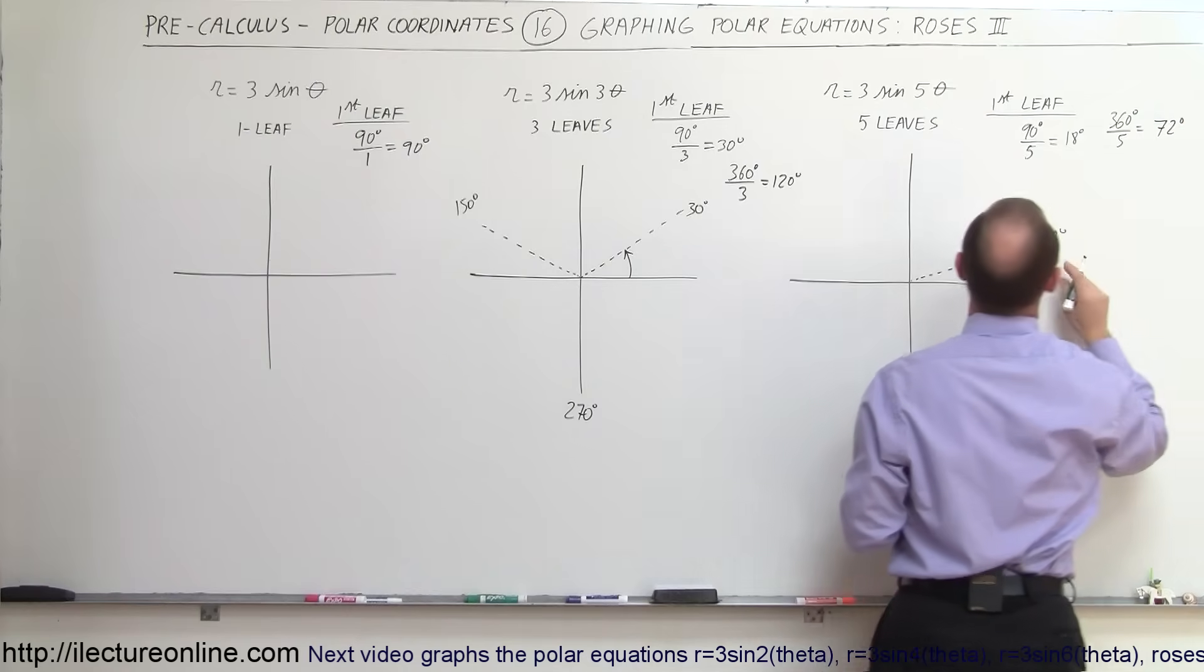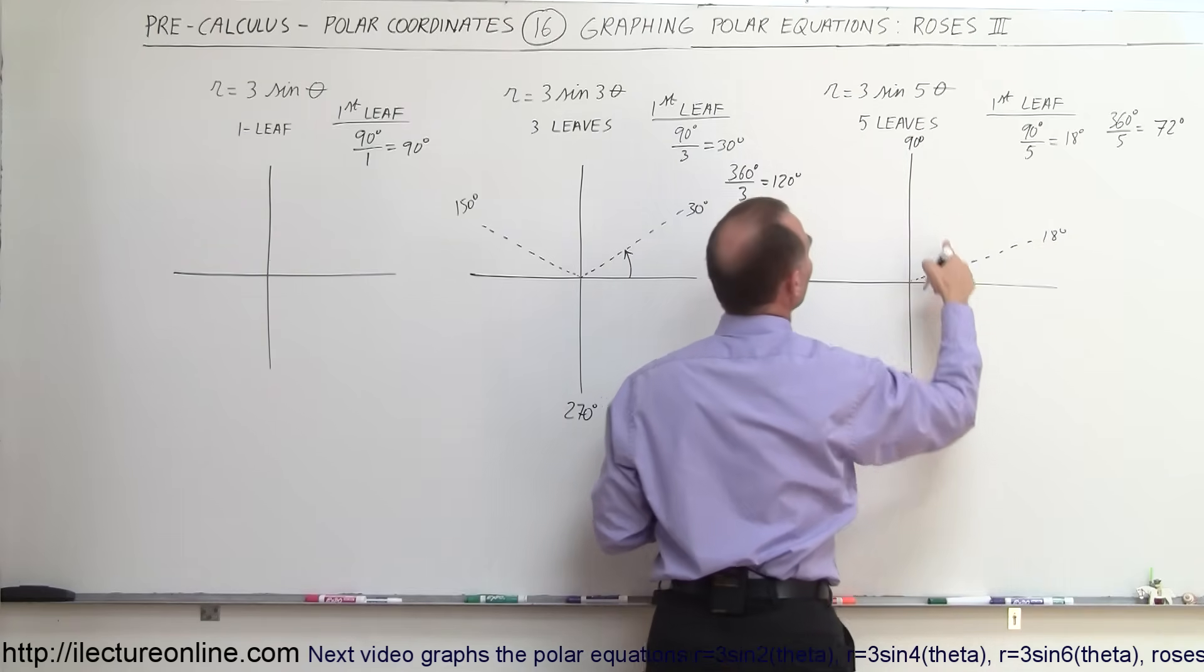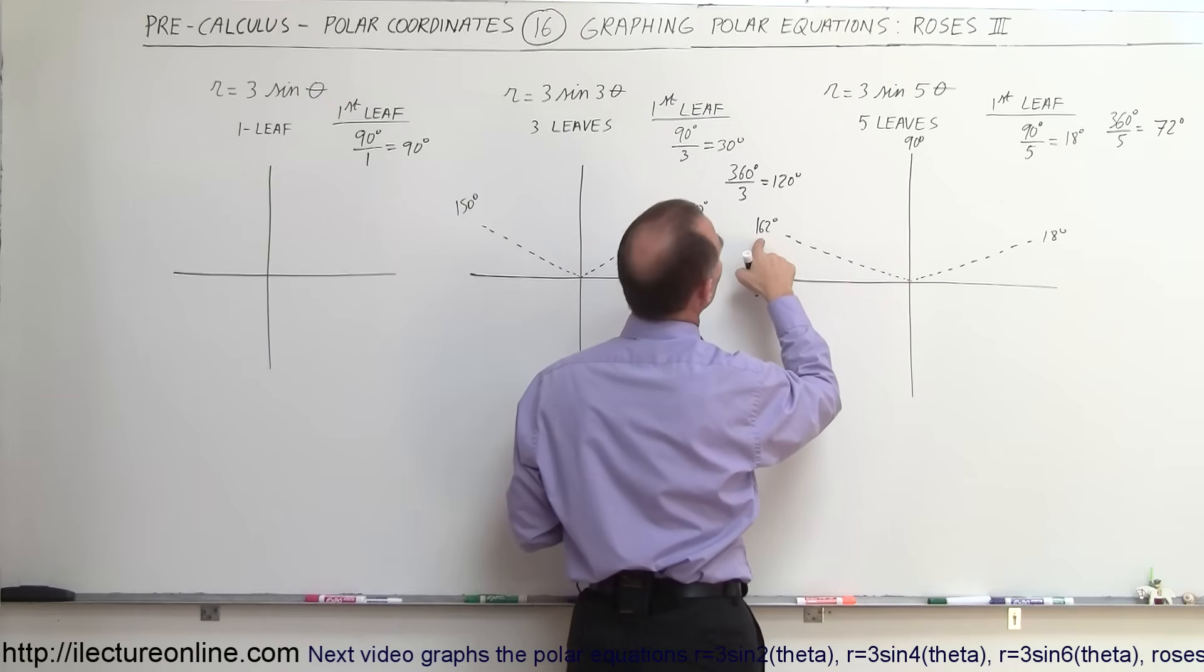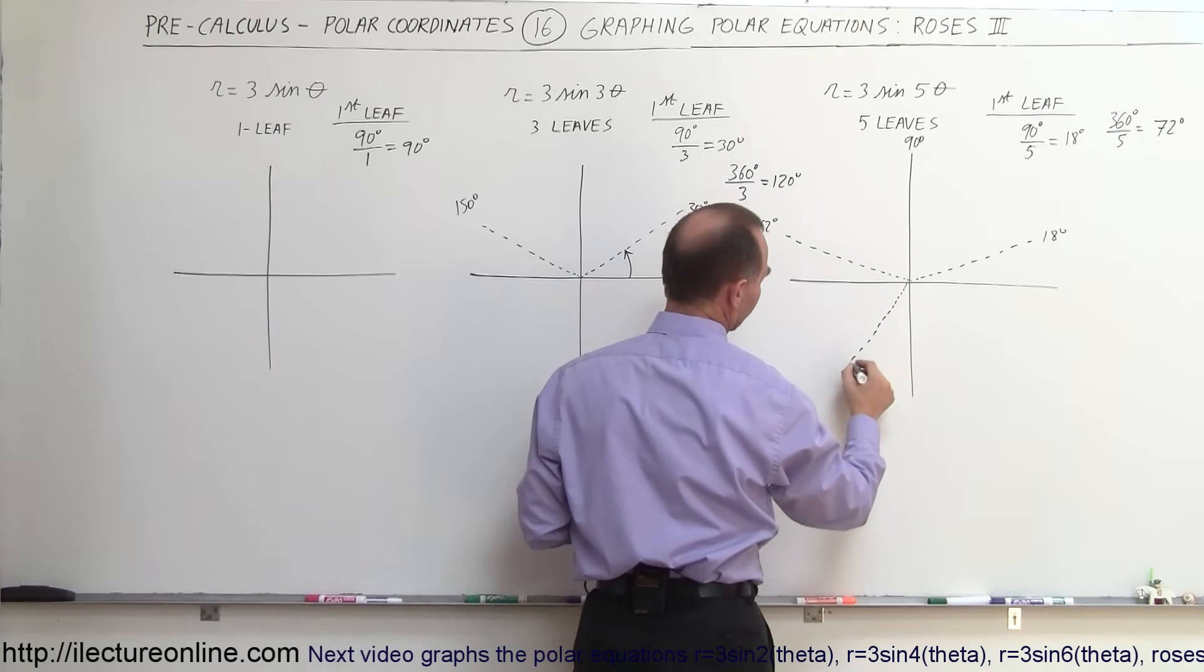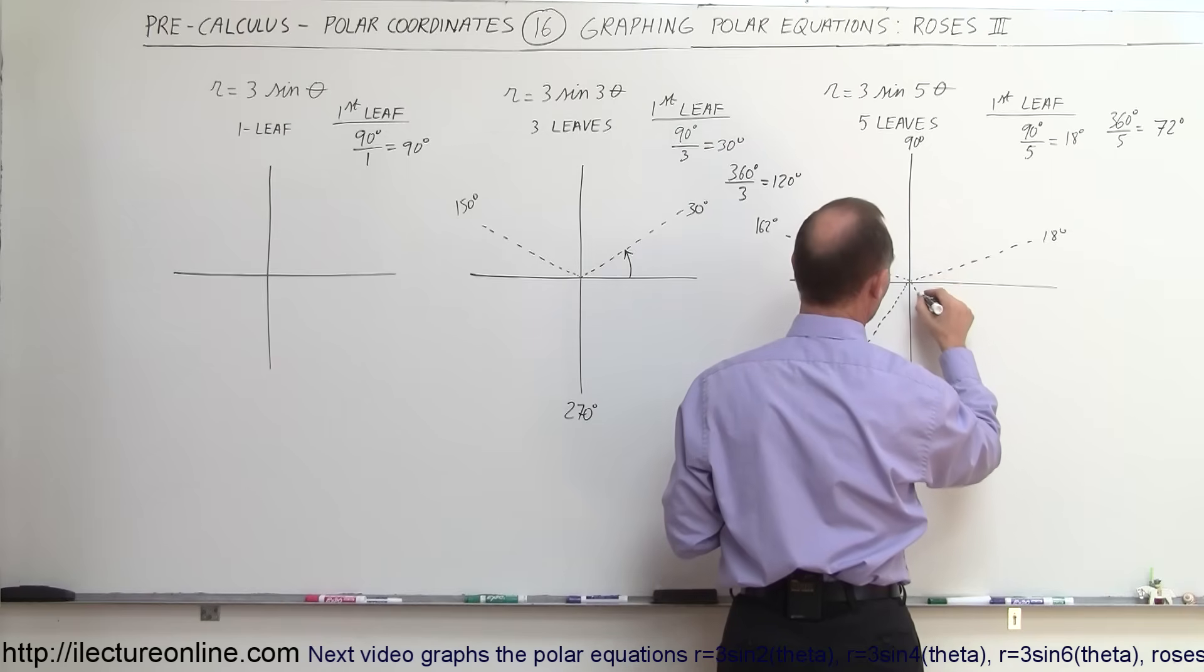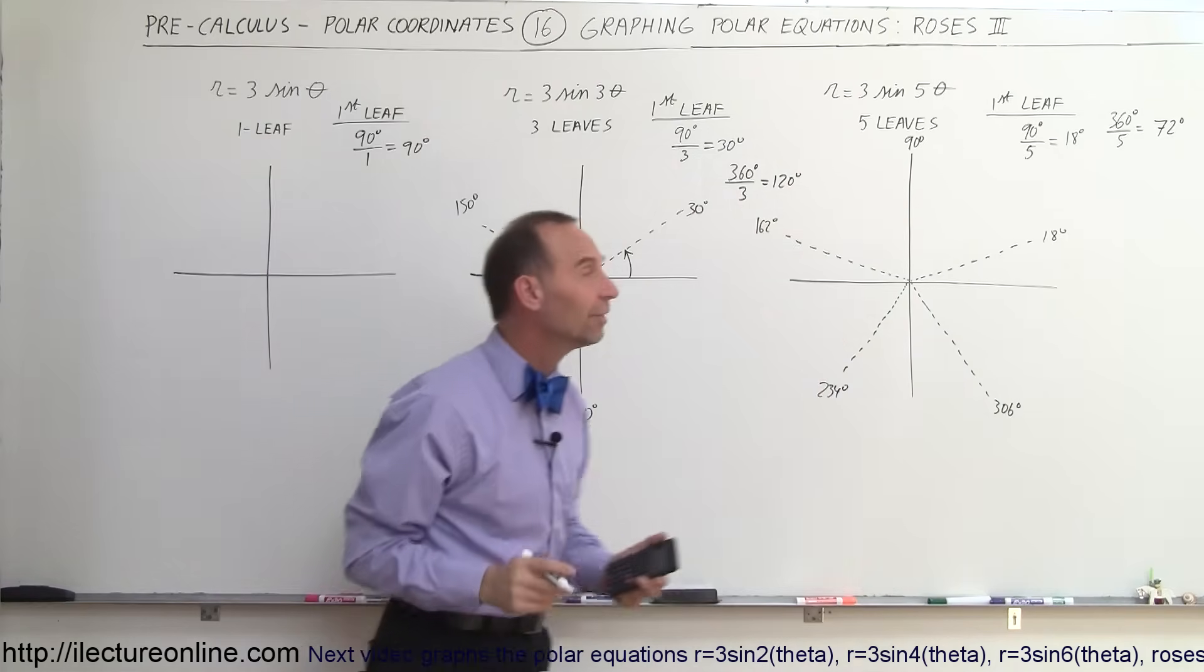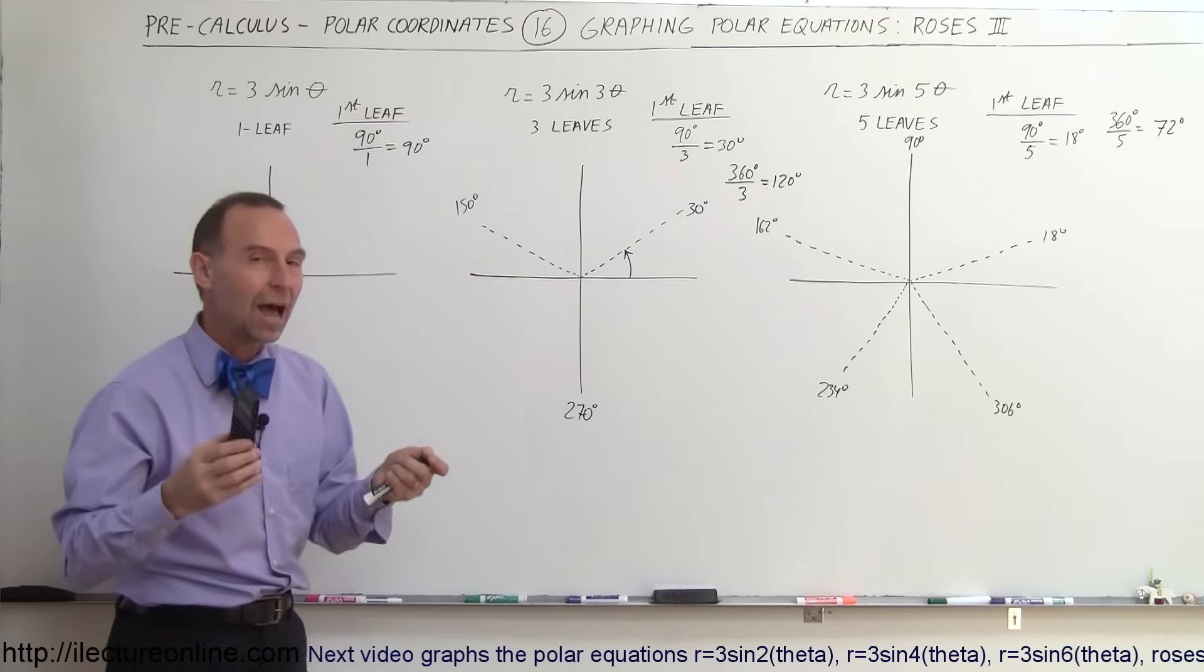Divide by 5 equals 72 degrees. So every 72 degrees, add 72 to 18, that gives you 90 degrees, so there'll be a second leaf at 90 degrees. A third leaf would be 90 plus 72, that's 162 degrees, that would be right about there. Add 72 to that, that would be 234 degrees. And add 72 to that, that would be 306 degrees. And so we have 1, 2, 3, 4, and 5 leaves, all evenly spaced, 72 degrees away from each other, starting at 18 degrees.